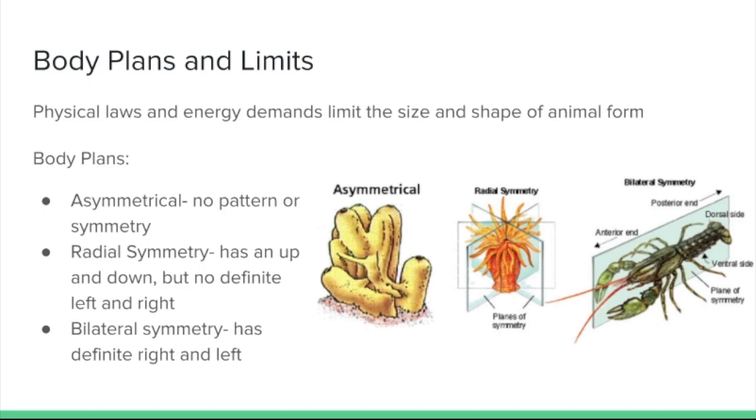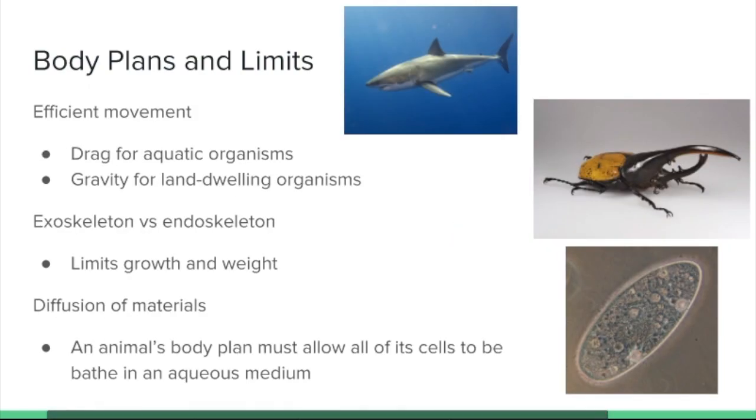And so what we find is that convergent evolution produces really similar physical features in organisms based on the pressures of the environment. For an example, an aquatic organism has pressure to be able to move with speed and to be able to navigate those waters quickly, reducing drag. And so we find that they tend to have more of a tube-like structure to their body that we call fusiform, where it's tapered at the head and at the caudal region like that of a shark.